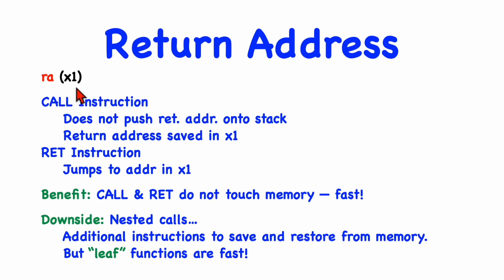The next register to look at is the return address register. The alternate name is simply RA. And this is used for call and return instructions. With RISC-V, the call instruction does not actually push the return address onto an in-memory stack. Instead, what it does is it saves the return address in the RA register. And then the return instruction, instead of going to memory, can simply jump to the address that's saved in this RA register.